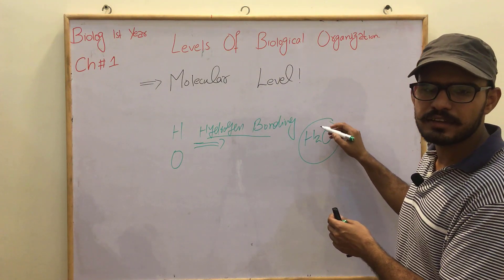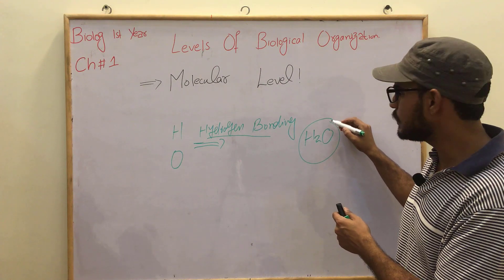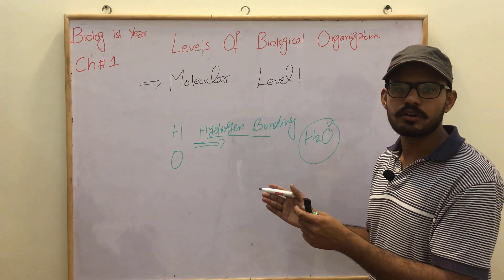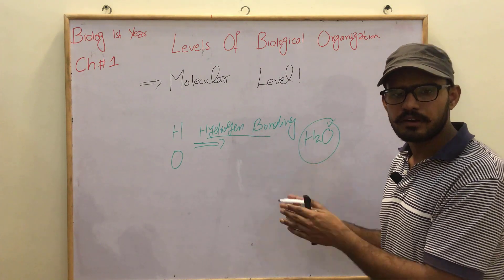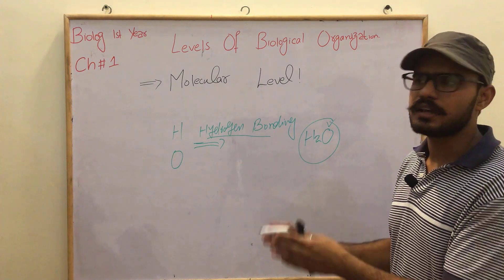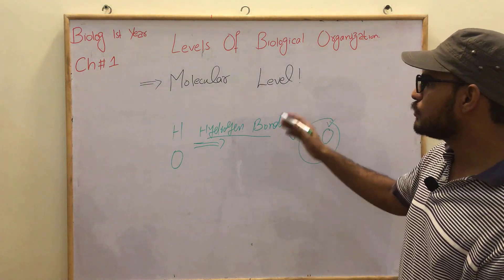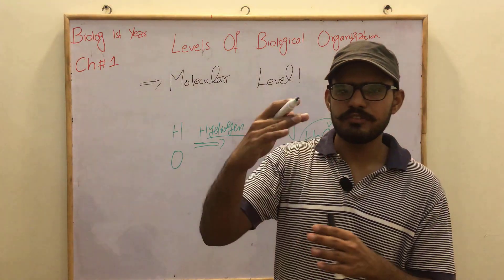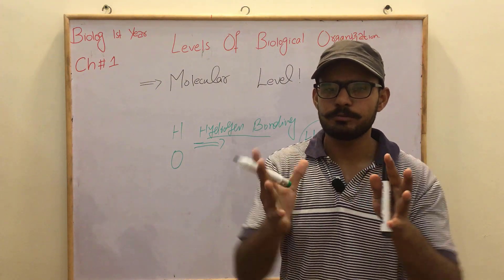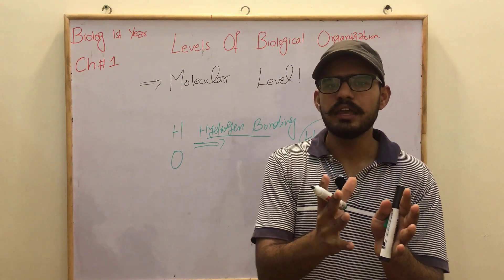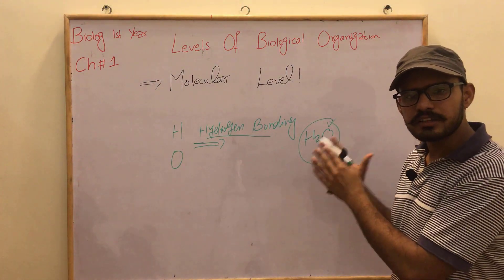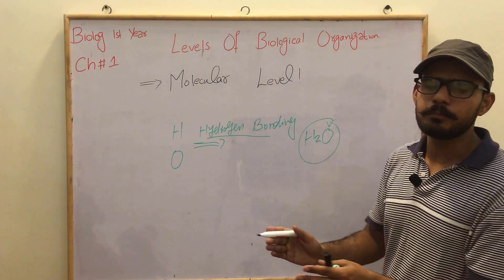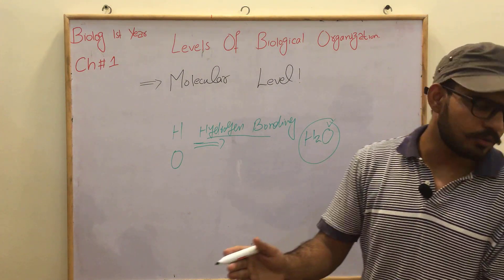What form will the molecule come into? The form of water. As a result, the molecule comes into the form of a molecule. So when we talk about different elements and combine them to get a final product, we call it the molecular level.